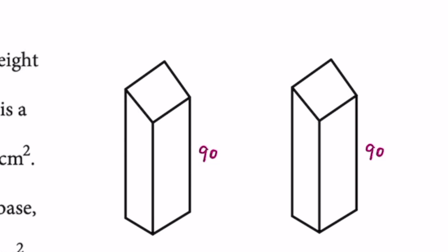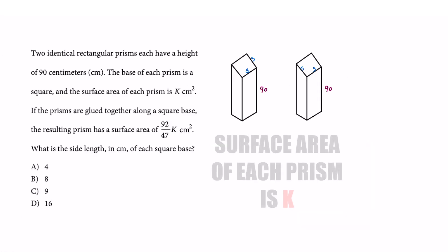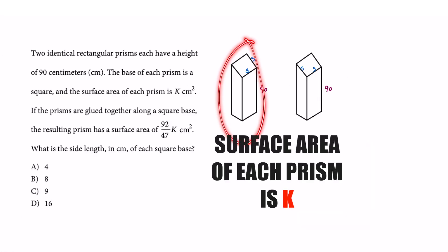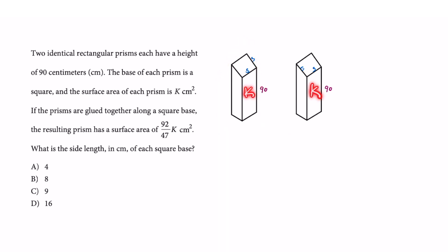So this part is a square, but it doesn't tell you what the side length of that square is. So let's just label that with side lengths of S. The surface area of that whole prism is going to be K. So both of them are K. If the prisms are glued together along a square base, the resulting prism has a surface area of 92 over 47 times K centimeters squared.